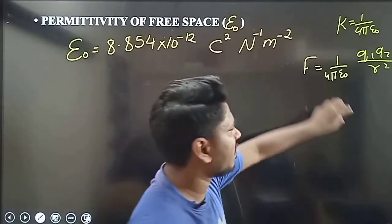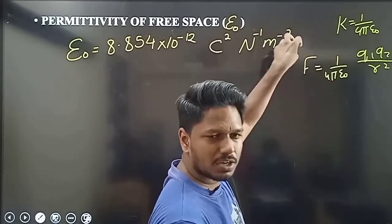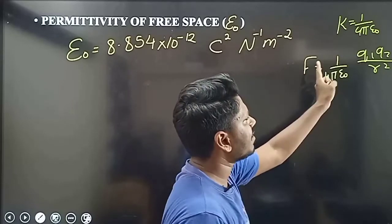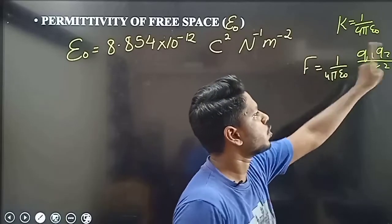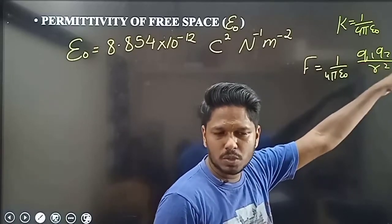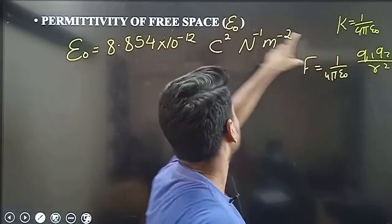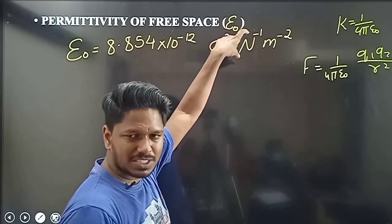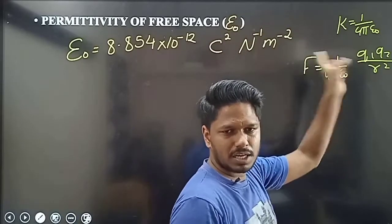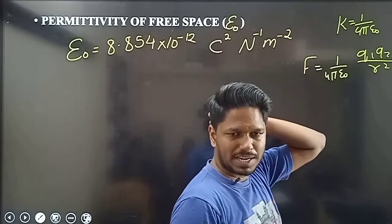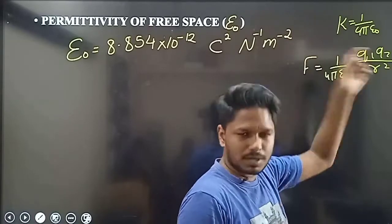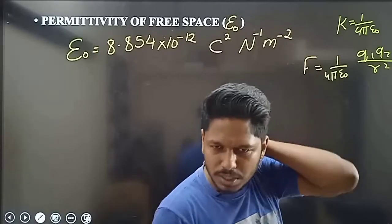If you look at the epsilon naught value: epsilon is equal to Q1 Q2 R squared over force. Q1 Q2 is charge, so charge squared is in the numerator. Newton is in the denominator — Newton power minus 1 — and it's meter squared, with meter in the denominator.